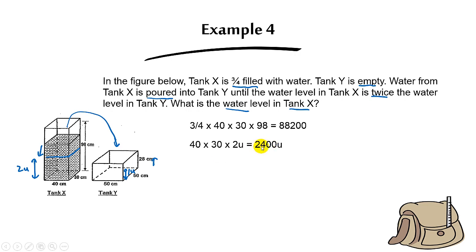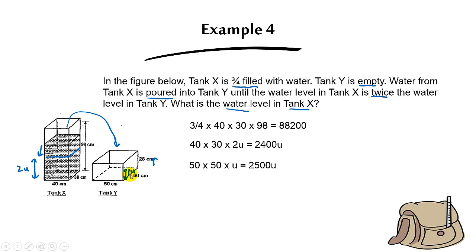The base area times two units gives 2,400 units for tank X. For tank Y, we take 50 times 50 times one unit, giving 2,500 units — this is the volume of water in tank Y after the transfer.